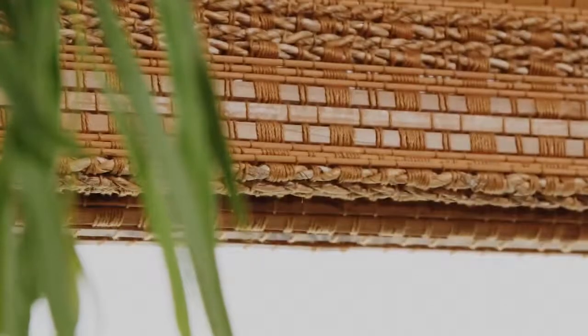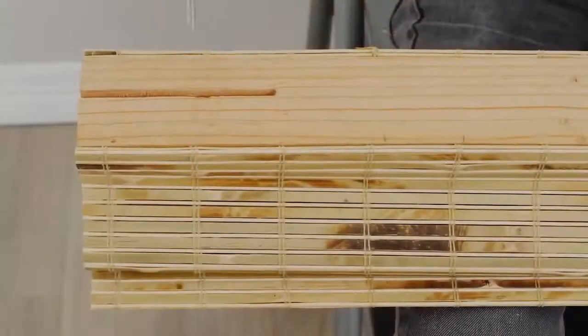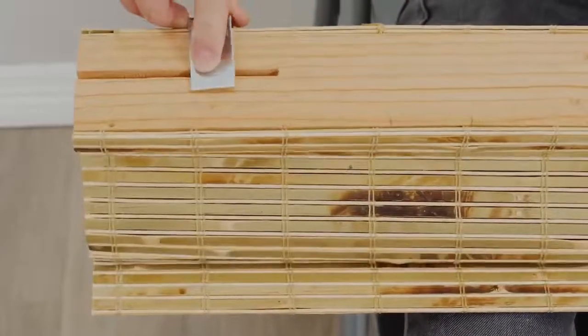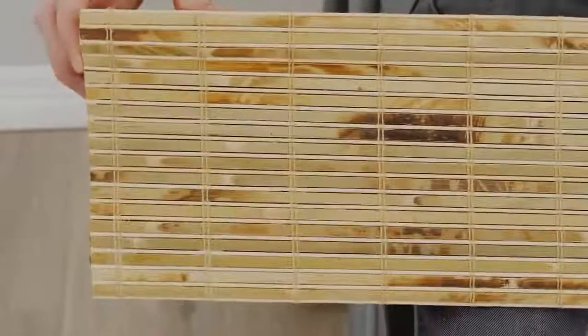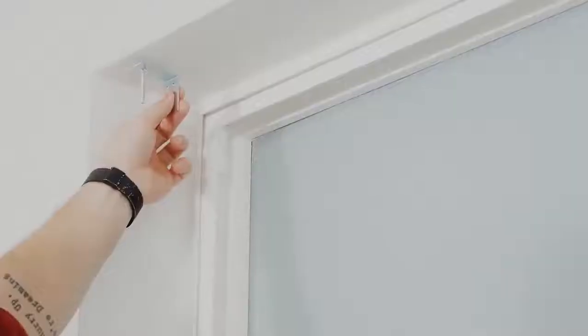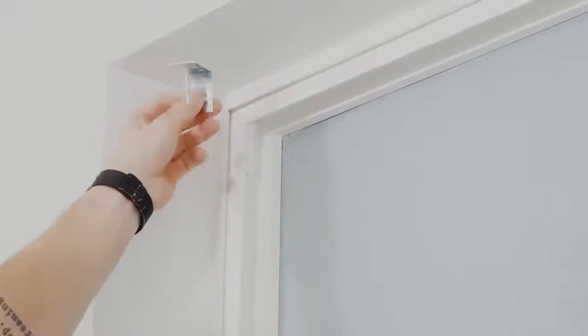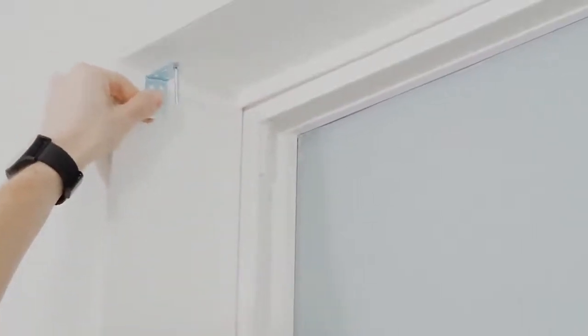Bamboo shades are one of the easiest window coverings to put up. The one I'm putting up today has these handy slots on the ends, which makes it super easy to position your brackets and attach the headrail to the window. Today, I'm installing this cordless shade as a top or ceiling mount, but you could also install it as a side mount if you want.